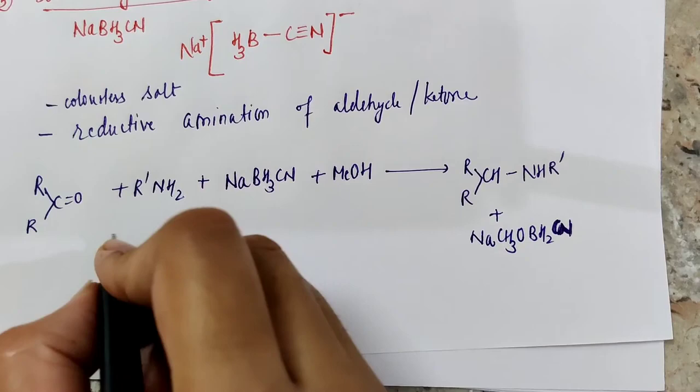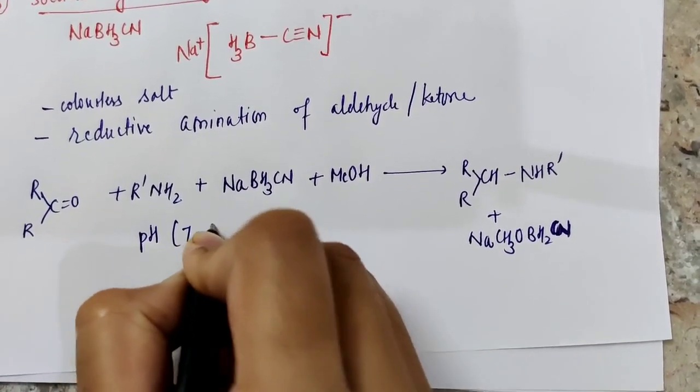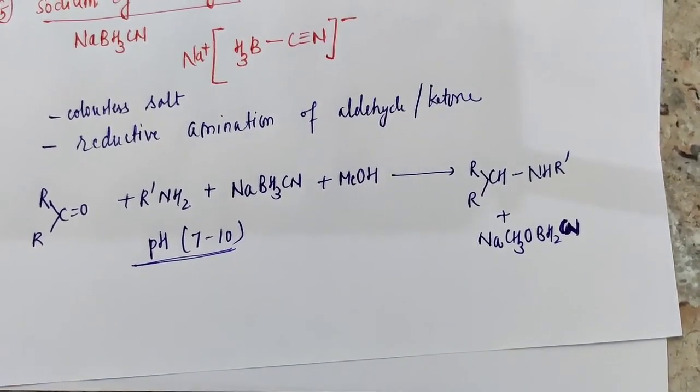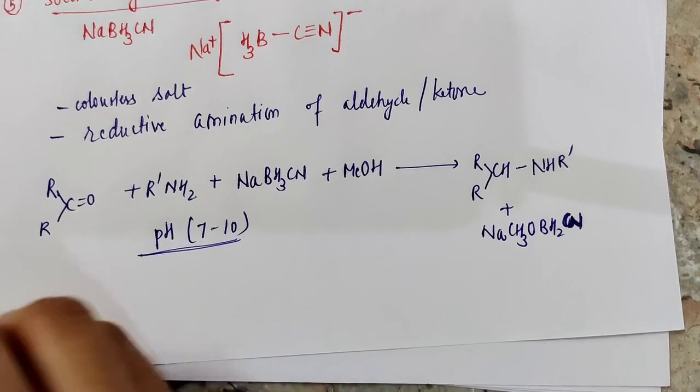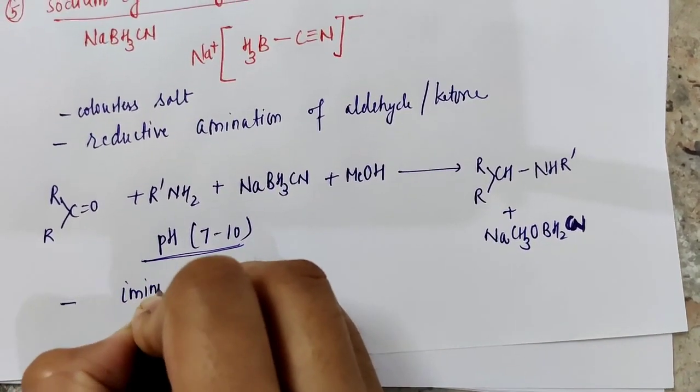In acidic condition that is pH 7 to 10, we get selectivity in reduction reaction. It is also used to convert imines to amines.